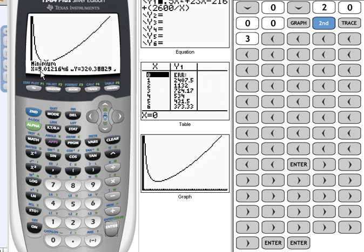Where the x value is basically 9 and the y value is 320.39. So that says when we create 9 of the lawn mowers, then our cost is 320.39.